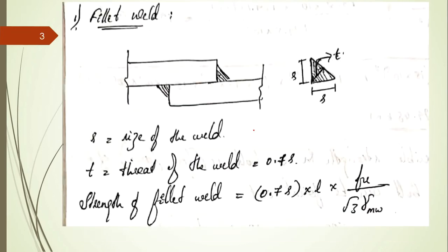For fillet weld, the strength is 0.7 times the size of the weld into the length of the weld, which gives the area of the weld. This is multiplied by FU divided by root 3 into gamma W.